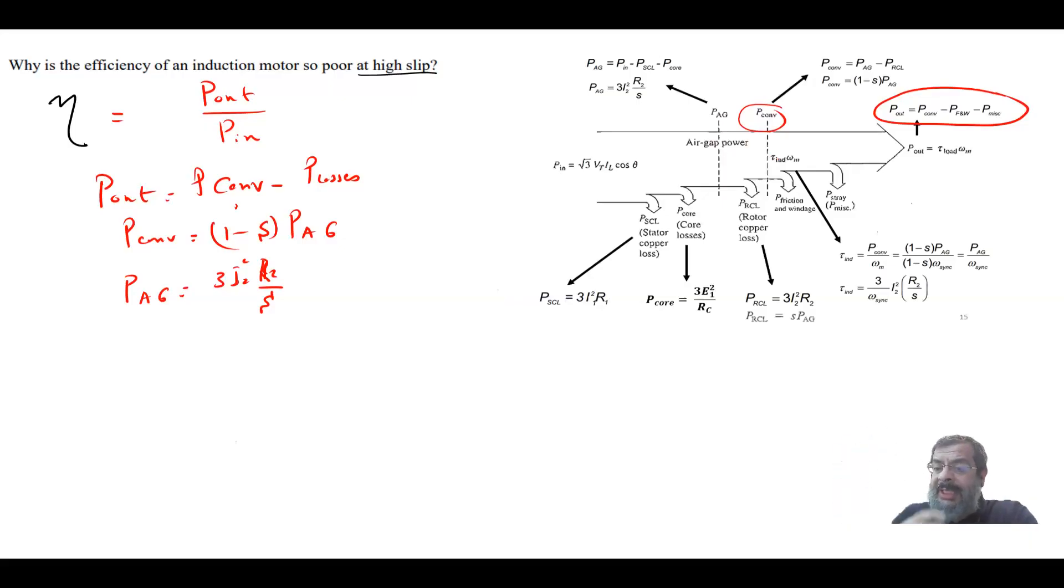So what will happen when your slip is high? When s is high, your P_air_gap will be low. When your P_air_gap is low and s is high, the P_convert is even lower. So P_out becomes extremely small.